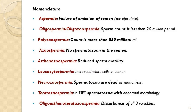Some patients may have total aspermia — no sample is obtained. This occurs in patients with spinal cord abnormalities, retrograde ejaculation, or failure of emission of semen. The next common abnormality is low count, called oligospermia, where the count is less than 15 million per ml. Causes include cytotoxic drugs, chronic alcoholism, excessive cigarette smoking, local genital tract infection, uncontrolled diabetes mellitus, or obstructive causes of the reproductive organs.